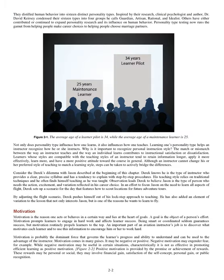In a continuing quest to figure out why humans do what they do, the mother-daughter team of Catherine Cook Briggs and Isabel Briggs Myers pioneered the Myers-Briggs Type Indicator (MBTI) test in 1962. The MBTI was based on Jungian theory, previous research into personality traits, and lengthy personal observations of human behavior. They believed that much seemingly random variation in human behavior is actually quite orderly and consistent, due to basic differences in the ways individuals prefer to use their perception and judgment. They distilled human behavior into 16 distinct personality types. Inspired by their research, clinical psychologist Dr. David Keirsey condensed their 16 types into four groups: guardian, artisan, rational, and idealist.